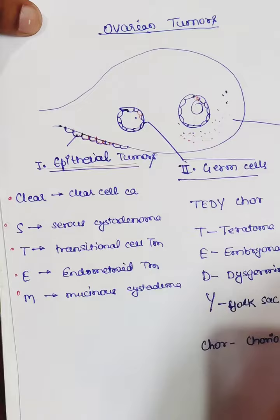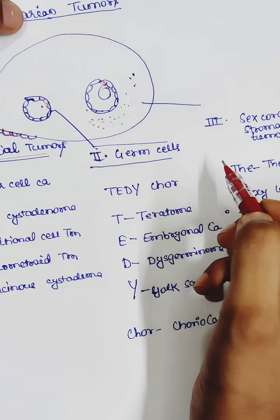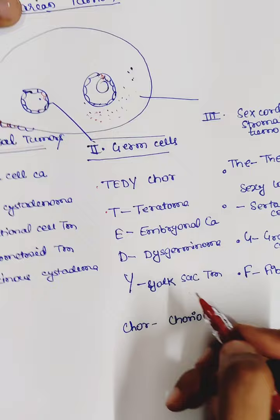The second group is germ cell tumors. Germ cell tumors arise from the germ cells. So the tumors falling in this category, the mnemonic is TEDDY CHORE. T for teratoma.